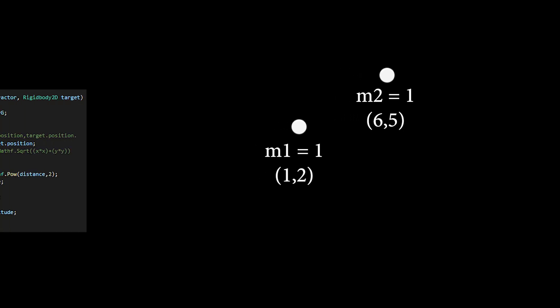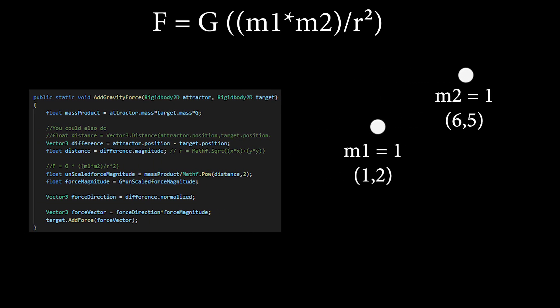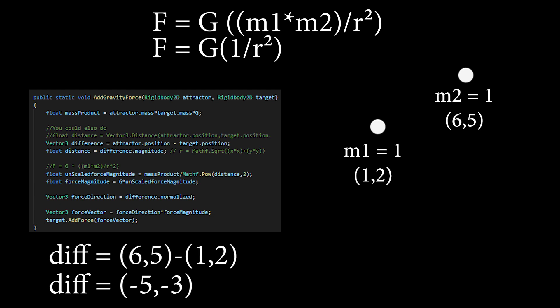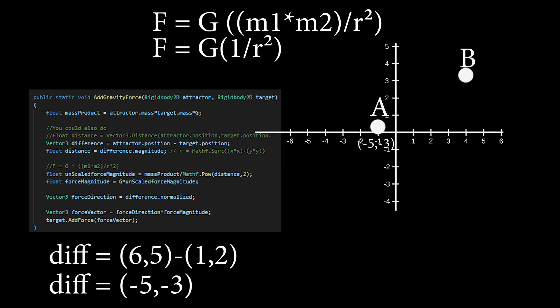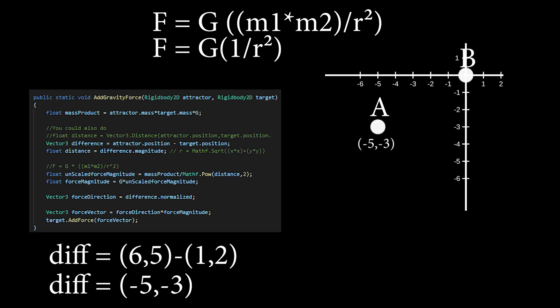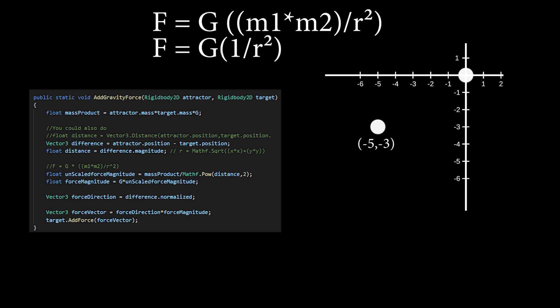Let's use Newton's theory of gravity to have one of them attract the other. First, I get the mass product by multiplying both masses. To get the distance between points, I subtract the second value from the first one. This gives us a vector from point B to point A, where point B is now at 0, 0, 0. From this vector, we can calculate the distance between them using Pythagoras' theorem,